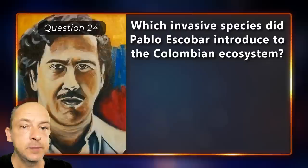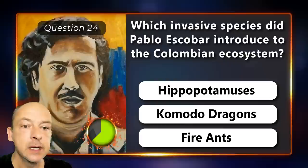Which invasive species did Pablo Escobar introduce to the Colombian ecosystem — hippopotamuses, Komodo dragons, or fire ants?